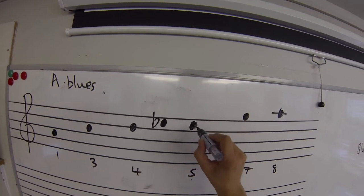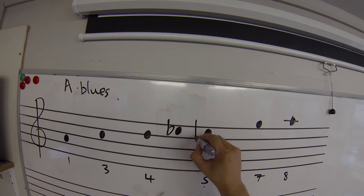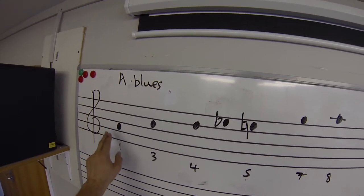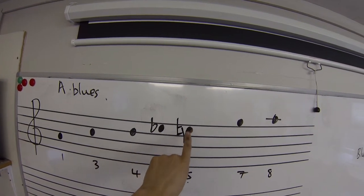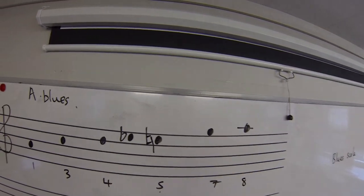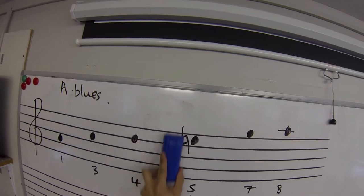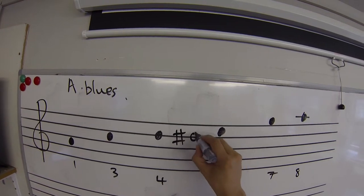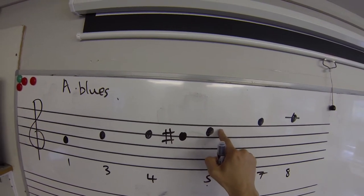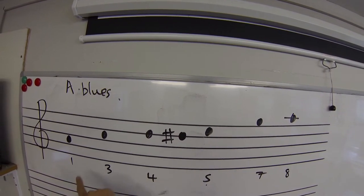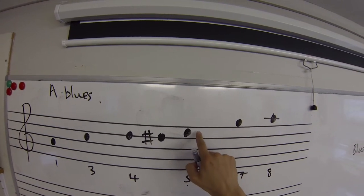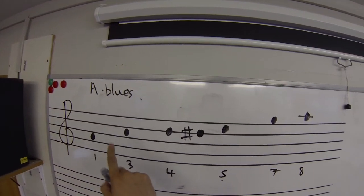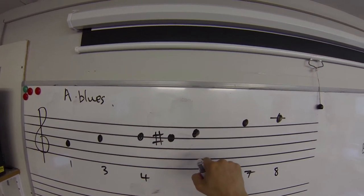So we go A, C, D, E flat, E natural, G, A. Whereas if I call it a D sharp, I haven't actually put any accidental that is going to color this E. On the way up, and so it becomes an E natural. It doesn't change, it is an E natural: A, C, D, D sharp, E, G, A.